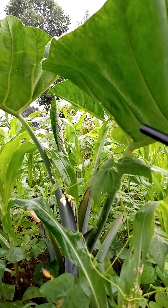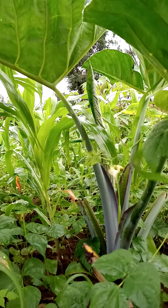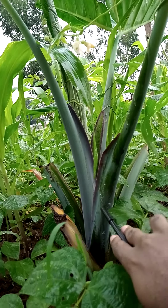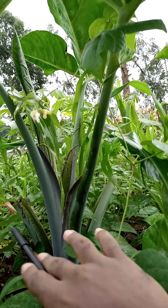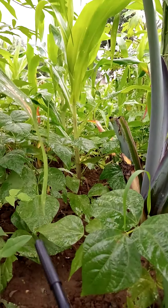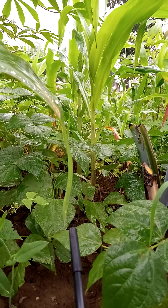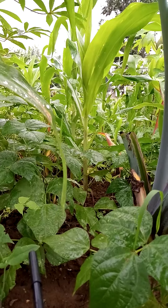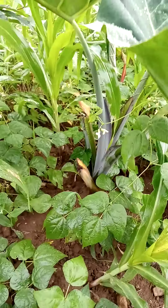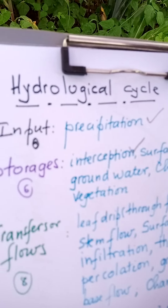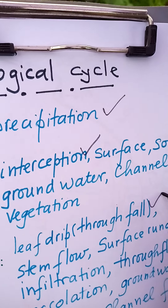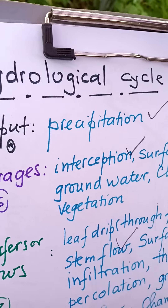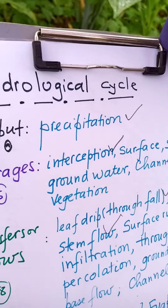Some water is flowing along the stem of the vegetation towards the surface — that is stem flow. Some drops, after being intercepted, fall off the leaf to the surface; that is what you call leaf drip, or through fall. So we have leaf drip or through fall, where drops were falling off the leaf, and stem flow, where water was flowing along the stem of the plant.